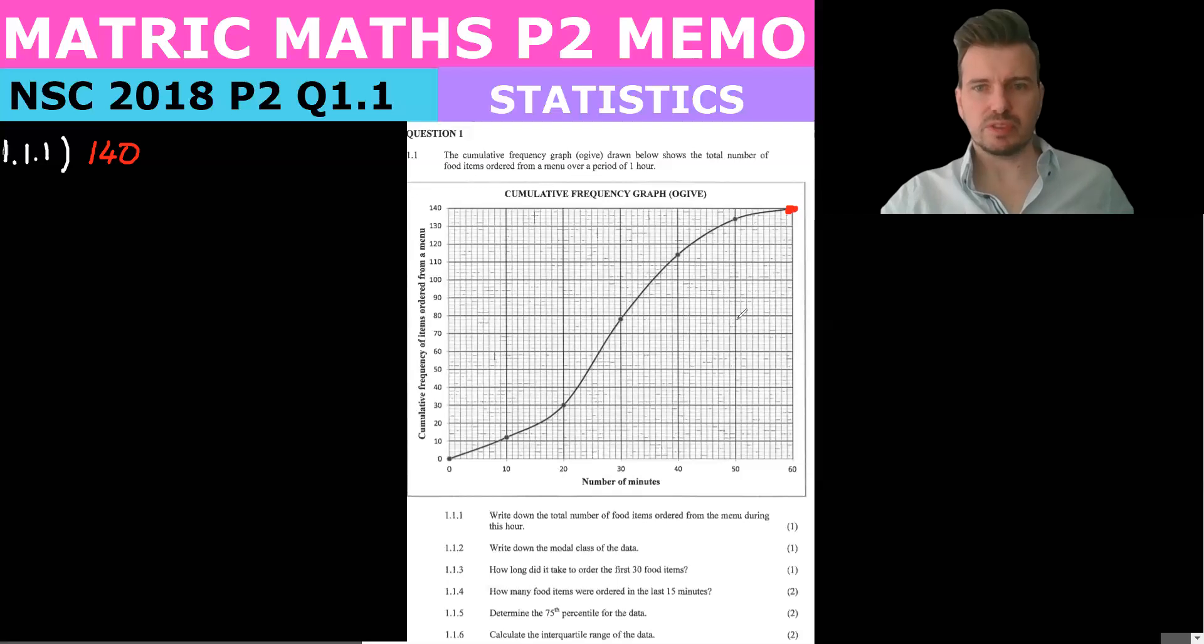Now 1.1.2 says write down the modal class of the data. The modal class, so that means the one that is the most. We know modal means most - you can remember it as M-O, most, modal, most. So that's from here to here, 20 to 30. So we see there the modal class is going to be 20, so x is going to be greater than and equal to 20 or less than 30.